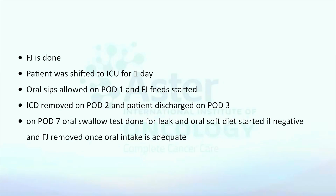The patient is shifted to the ICU for one day. Oral sips are allowed from POD1 and FJ feeds are started. The intercostal drain is removed on POD2 and the patient is discharged on POD3. On POD7, we do an oral swallow leak test. If it is negative, we remove the neck drain, start oral intake, and remove the FJ once oral intake is adequate.